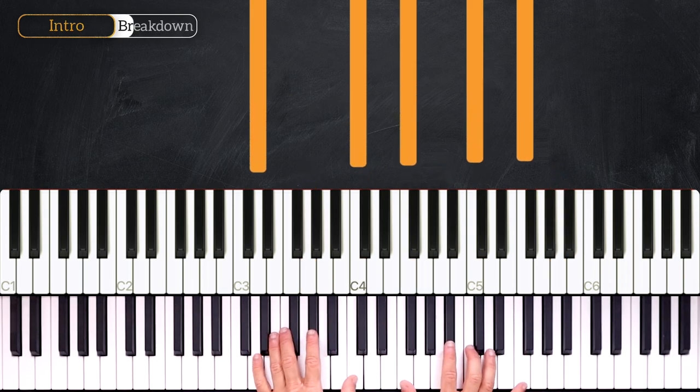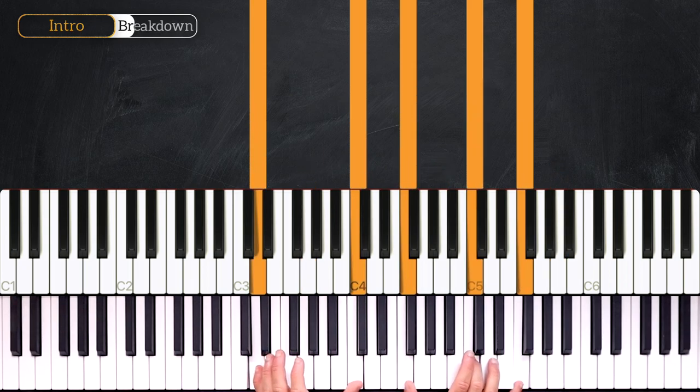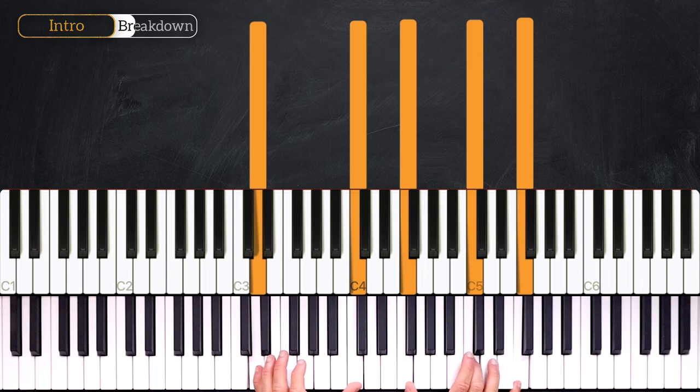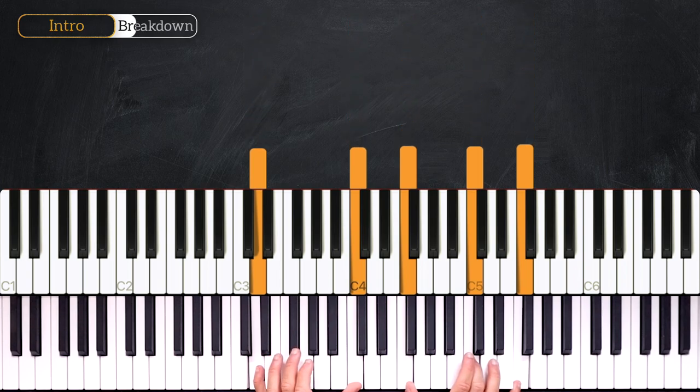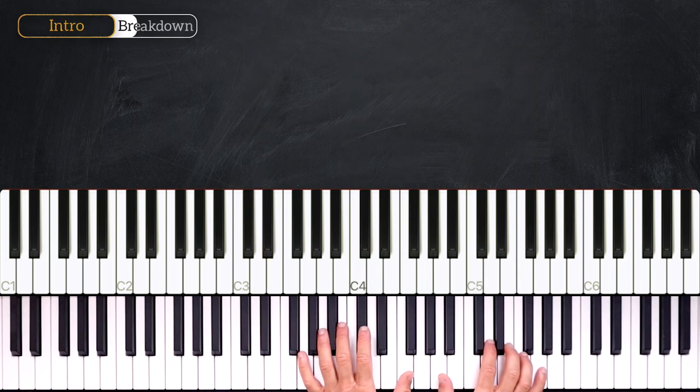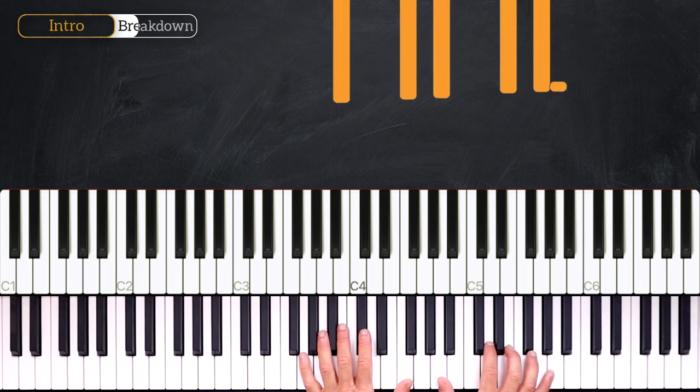Then we'll play D minor 7, which is the second degree. G9 add 13, and then we'll finish on the fifth, playing G9 add 13.